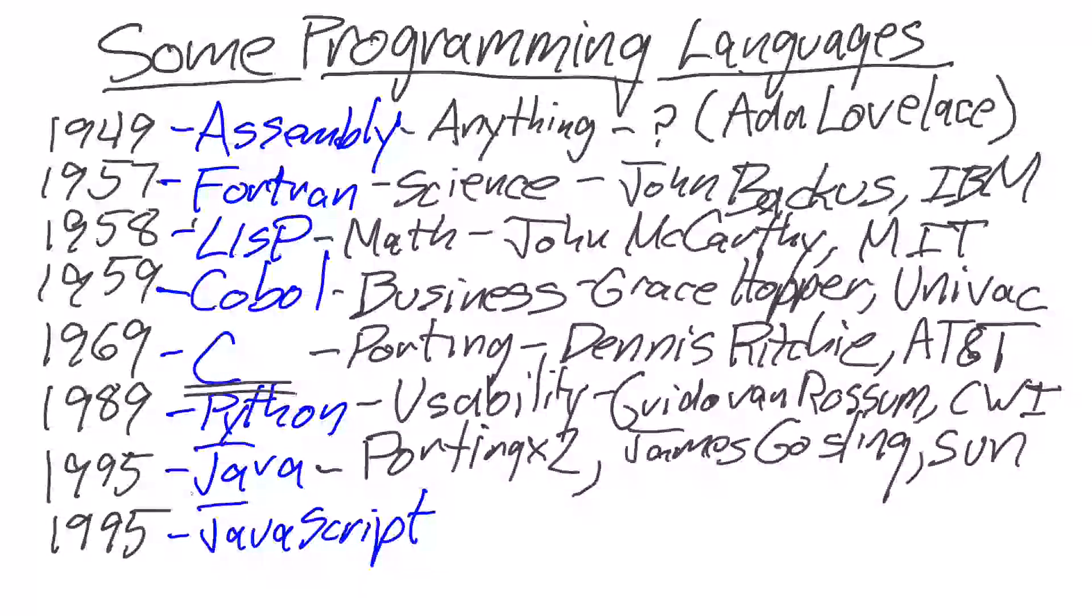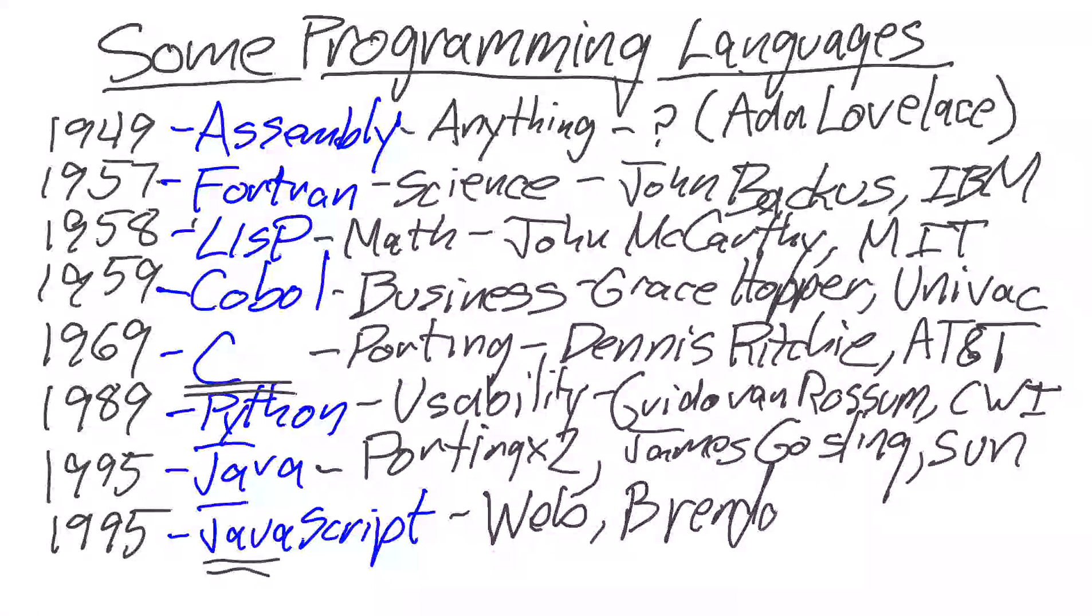And that same year, given the massive popularity or hype surrounding Java, the language that was built into web browsers for the web - the problem domain for JavaScript was the web. Netscape built a language into the Netscape browser that was designed to be familiar and rapidly embraced by people. That's the only reason for Java in the name. JavaScript is not Java. It shares syntax, but the way the code executes is very different. That was invented by Brendan Eich, and that was done for Netscape.